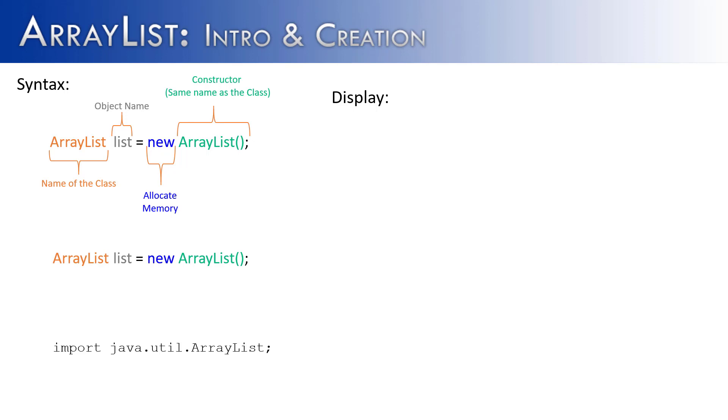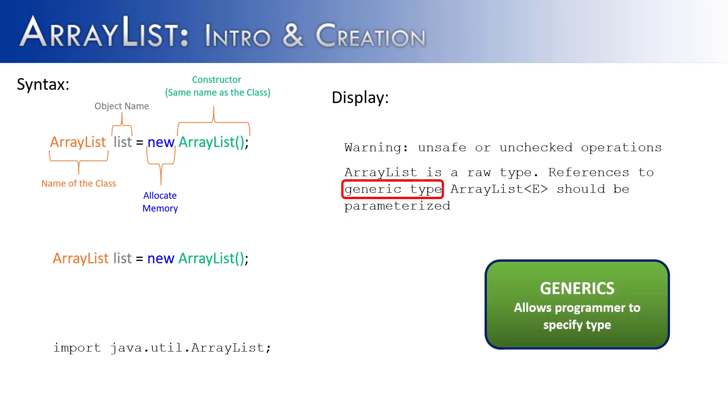It might say something like, warning, unsafe or unchecked operations. Or ArrayList is a raw type. References to generic type ArrayList E should be parameterized. And you say, well, what does that mean? Well, the keyword here is generic type. Generics allows a programmer to specify what type the ArrayList is going to be. So it would look something like this, as I'm showing you in the second declaration of our ArrayList.